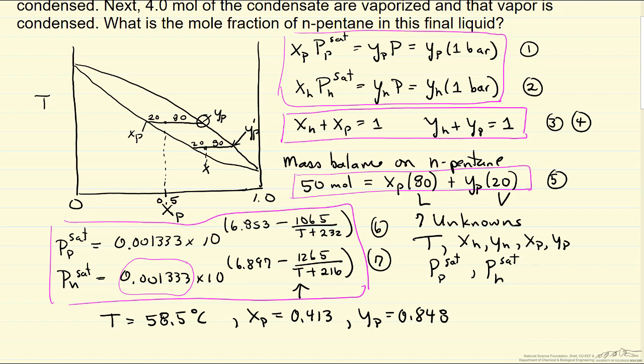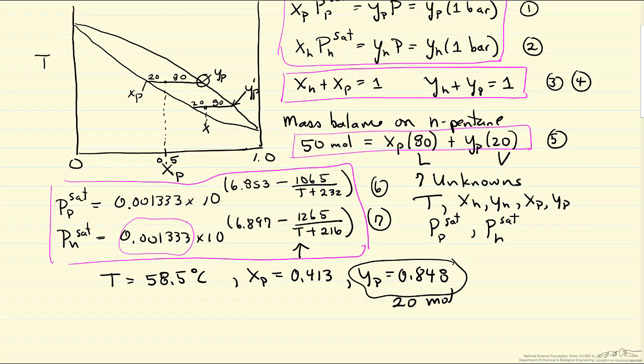And now we're going to take the vapor phase which has this mole fraction. And remember, we have 20 moles. We're going to condense that and then take that liquid and carry out the second flash like we discussed.